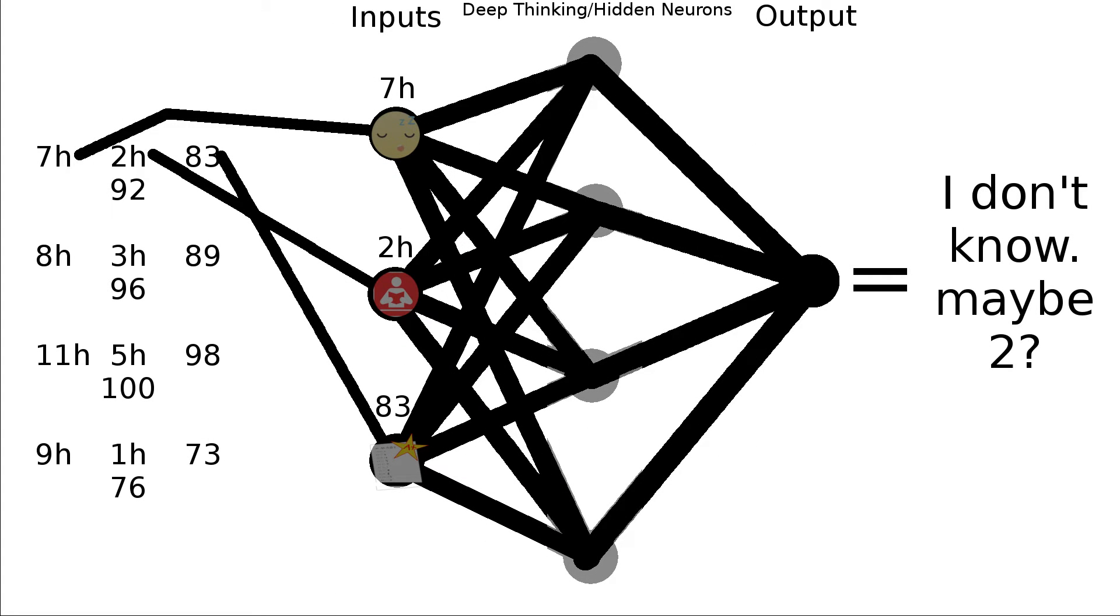Remember how I said that we would be using a backpropagation neural network? Let me explain that now. After each time a neural network produces an output during training, it compares the output it produced with the actual output. It then produces a value called a loss, which is basically how close the neural network was to the actual output. It then goes back, adjusts the correlations, and tries again with the same input to see if it could get closer to the actual output. It keeps doing this until a set value of iteration set by the programmer of the neural network is met.